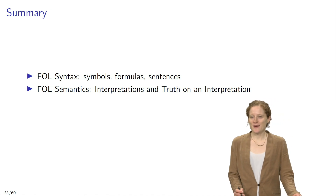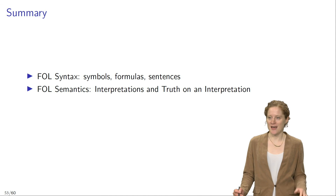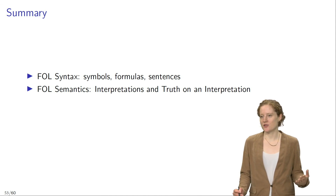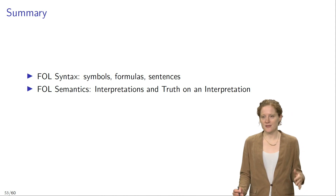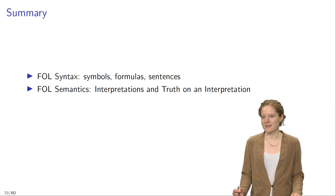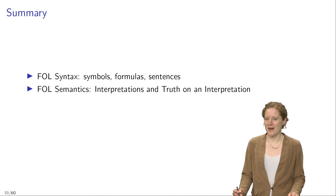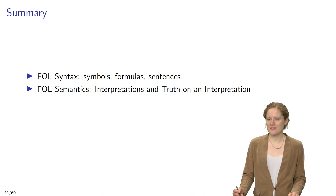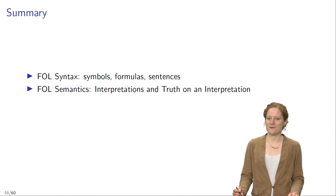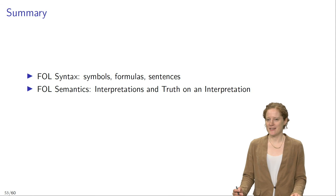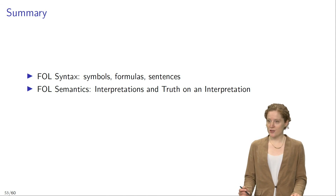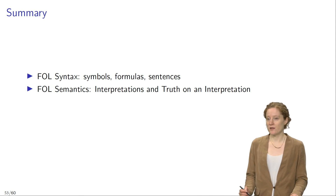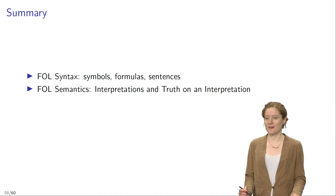What have we accomplished today? We have gotten to know the formal language FOL, proceeding in two main steps. First we discussed the syntax of FOL — all the different symbols that may appear in FOL sentences, how to form FOL formulas, and how FOL sentences differ from FOL formulas. Then we moved on to discuss the semantics of FOL, introducing the concept of an interpretation and explaining what it takes for FOL sentences to be true on a given interpretation.